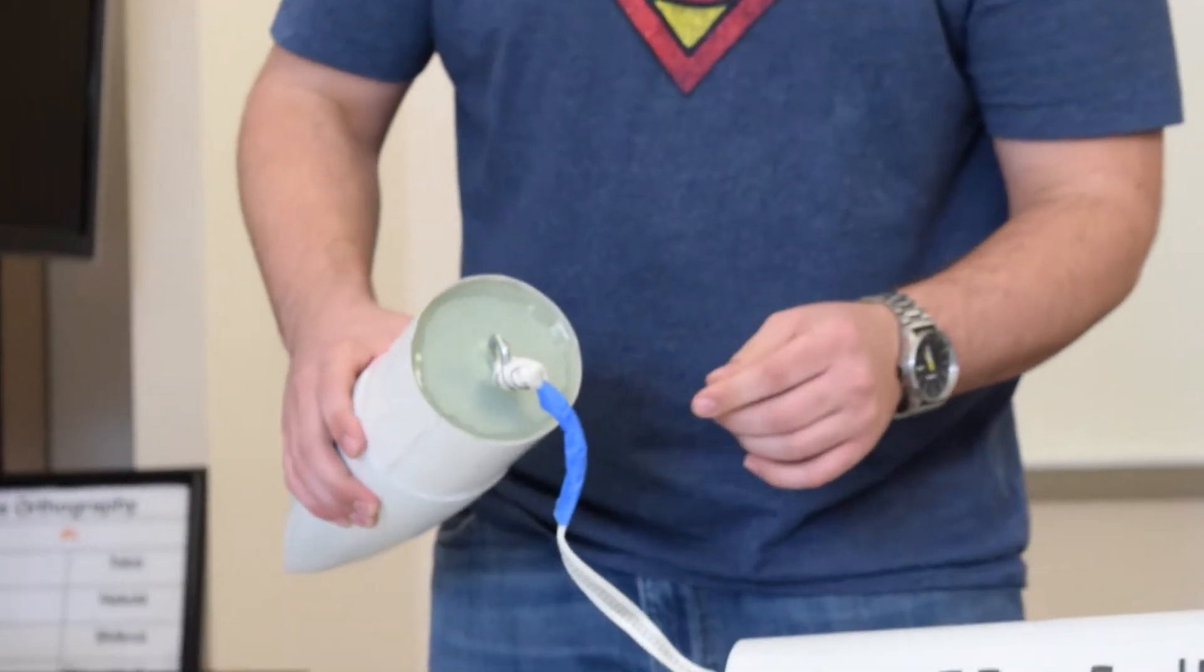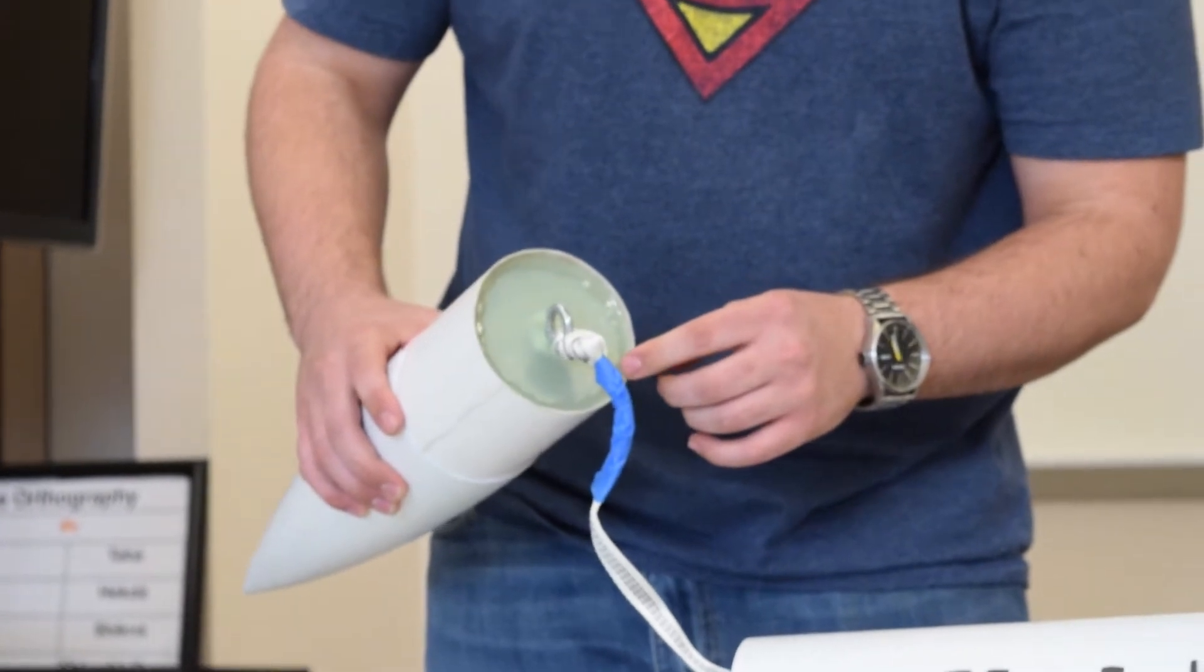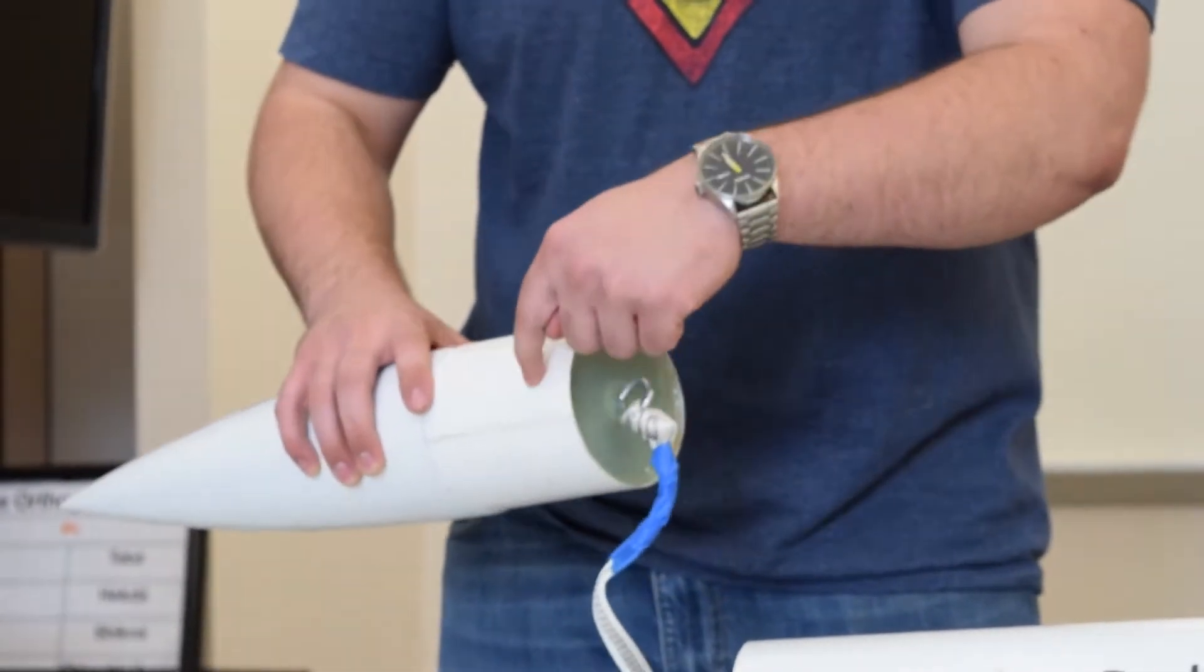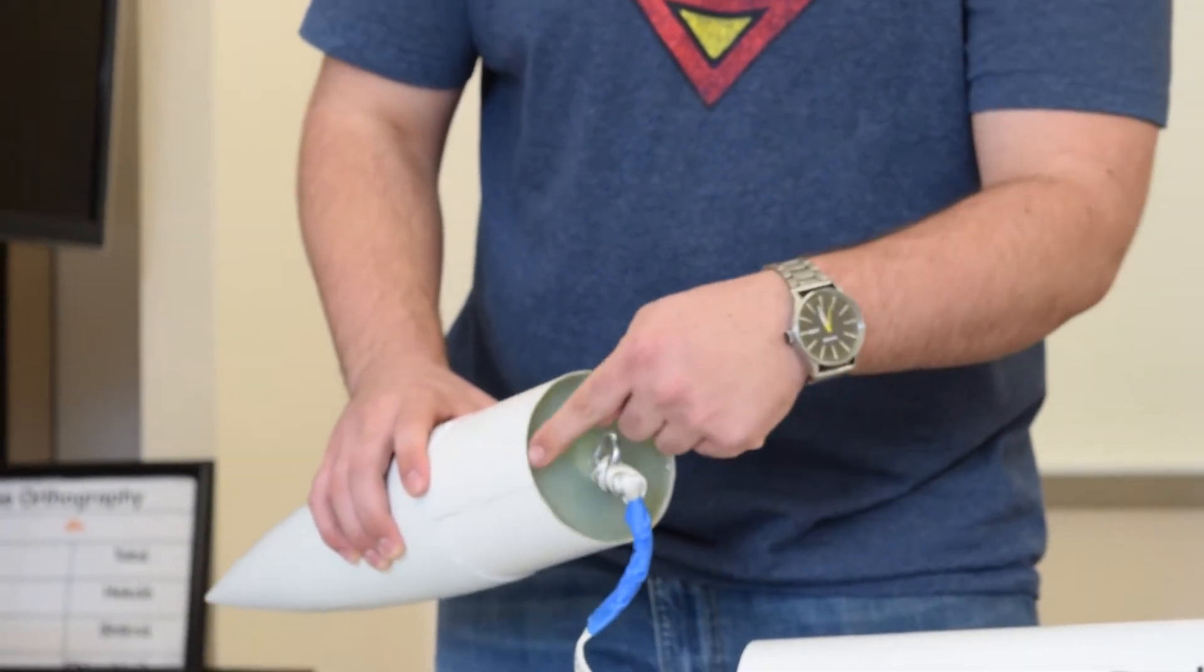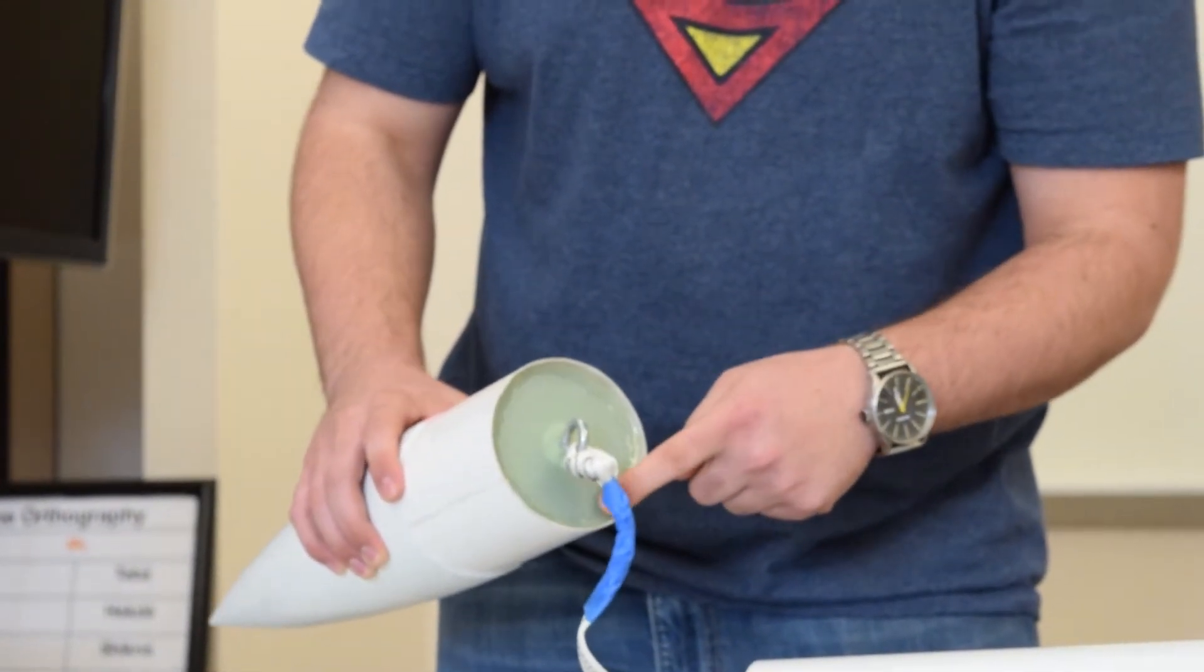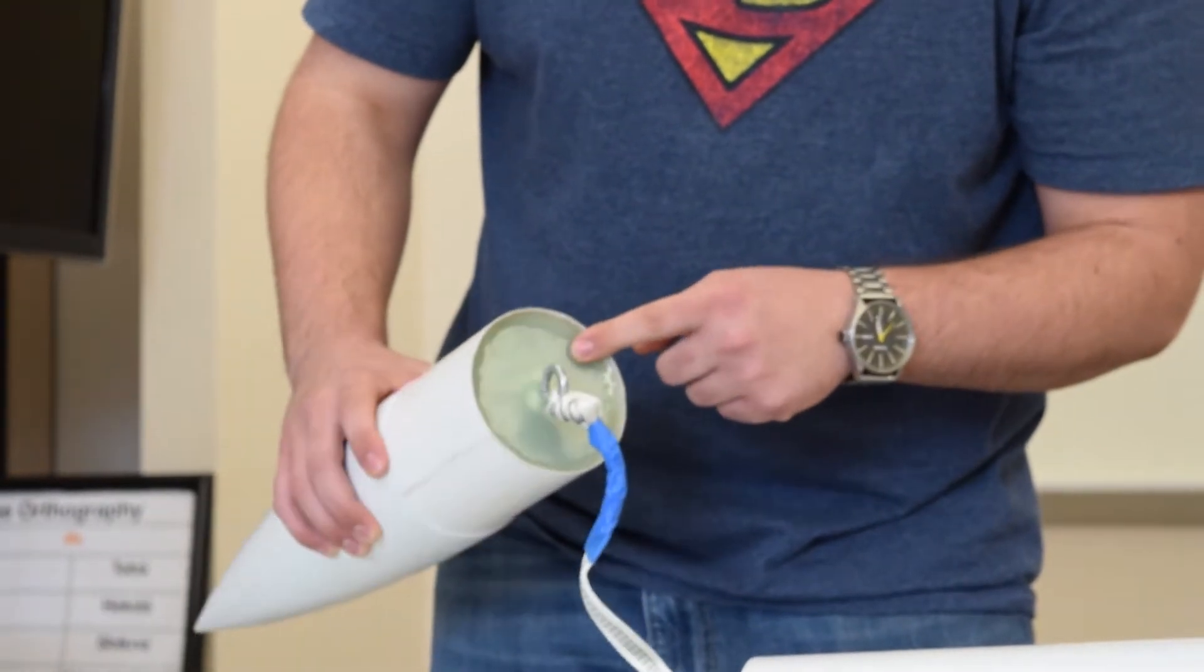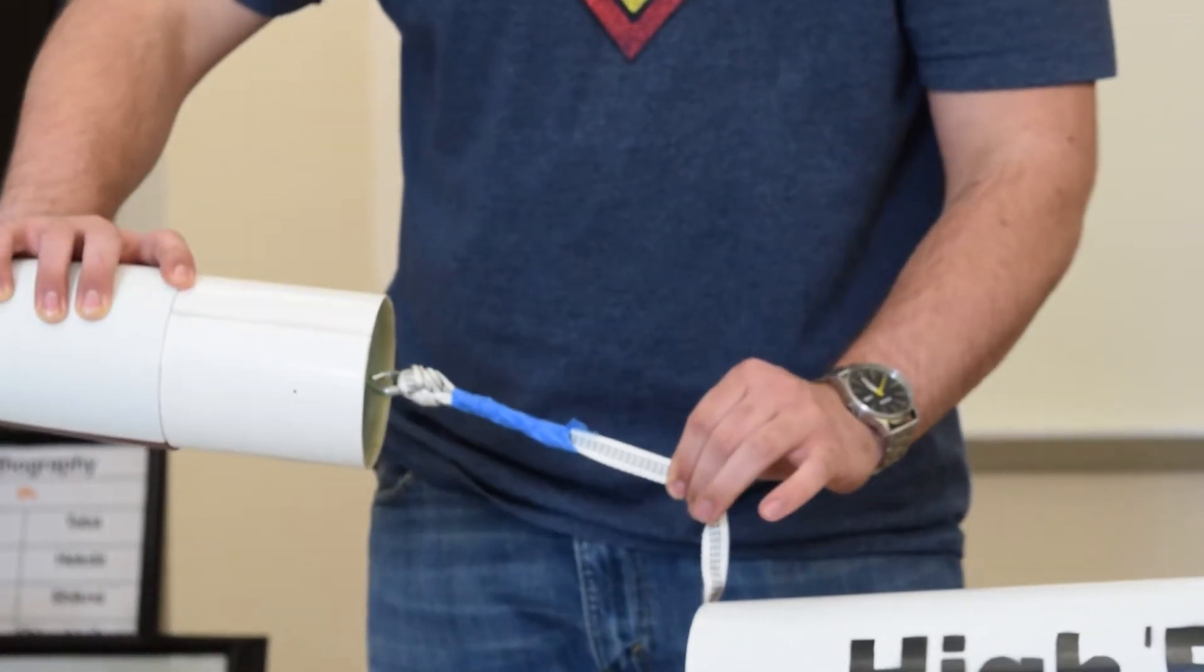On the forward bulkhead here, what we had to do was go ahead and put epoxy putty and make kind of a lip around here and push the bulkhead in and then use liquid epoxy on the top. And then right onto that we screwed our eye bolt with the cable.